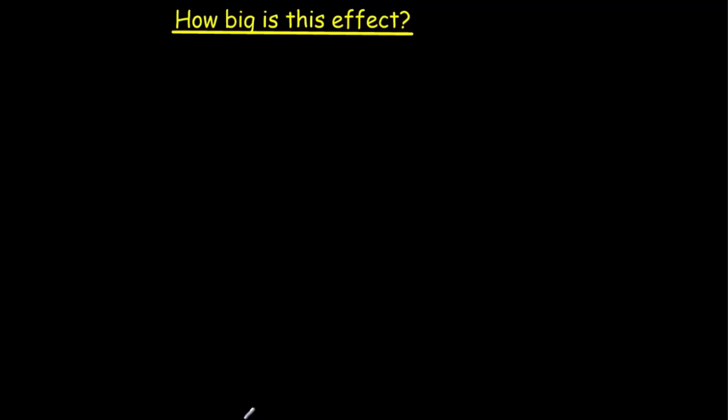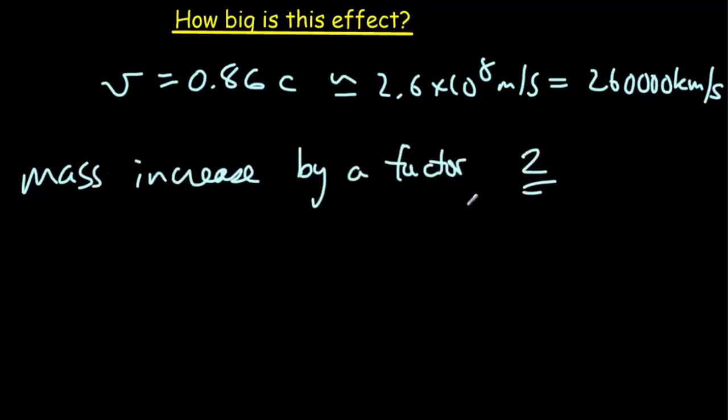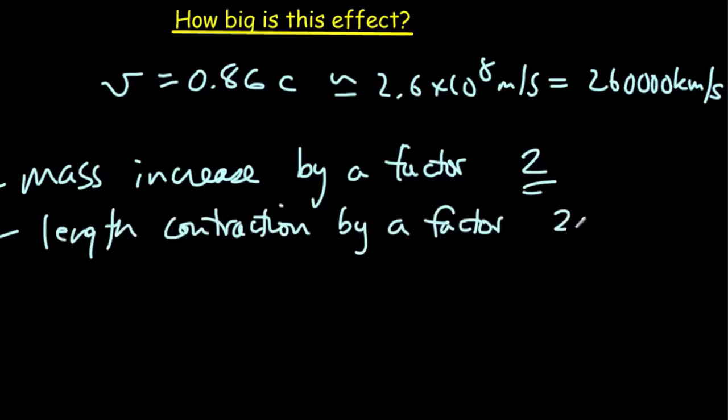Now, the next question you're probably asking yourself is, how big is this effect? Well, let's assume we have a relative speed of 86% the speed of light. So we've got V equal to 0.86 times the speed of light, which is about 2.6 times 10 to the eighth meters per second, which is 260,000 kilometers every second. If that was our speed, then we'd get a mass increase by a factor of two, and a length contraction by a factor of two also. And the time slows by a factor of two.